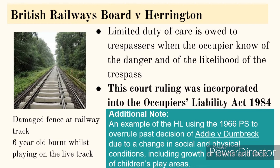In that case, there was damage to a fence and people in the community often used the hole in the fence as a shortcut across the railway line. Unfortunately, a six-year-old was playing on the tracks and was burnt while playing on the live track. He was a trespasser — he wasn't supposed to be on the railway line. However, there was evidence that the railway board knew of the damaged fence and knew that people did go on the lines. The court held that yes, there was a duty of care owed to a trespasser when the occupier knows of the danger and that there could be trespassers.